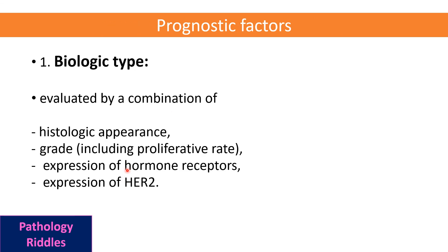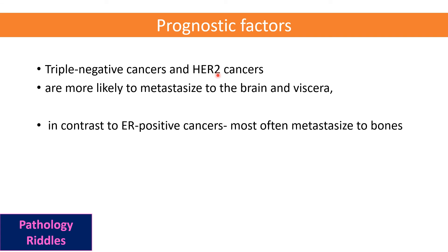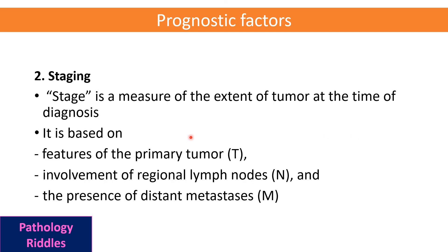Prognosis is evaluated by a combination of histologic appearance, grading, expression of hormone receptors, and expression of HER2 to give a five-year survival estimate and guide treatment modalities. Triple negative cancers are more likely to metastasize to brain and viscera, while ER-positive cancers are more likely to metastasize to bones.